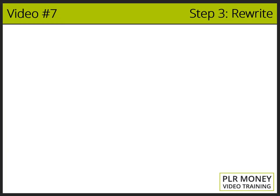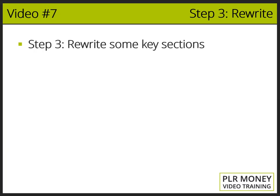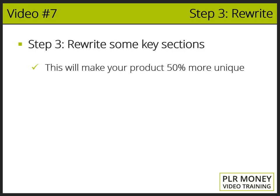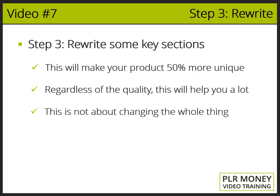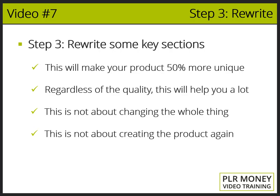Video number seven, step number three: rewrite some key sections inside the material. This step will make your product 50% more unique than every one of your competitors, regardless of the quality of the PLR product you may have. This step will help you create a unique and high-quality product. Remember, the higher the quality of the PLR product you get, the less money and effort you'll have to invest. I'm not talking about changing the whole thing or creating the product again.